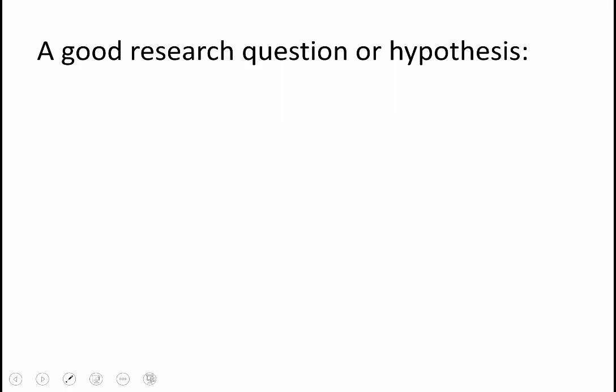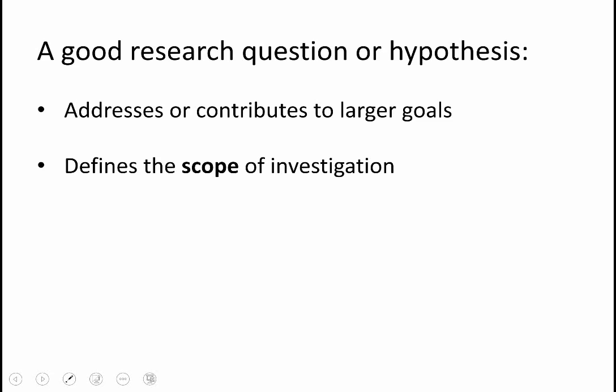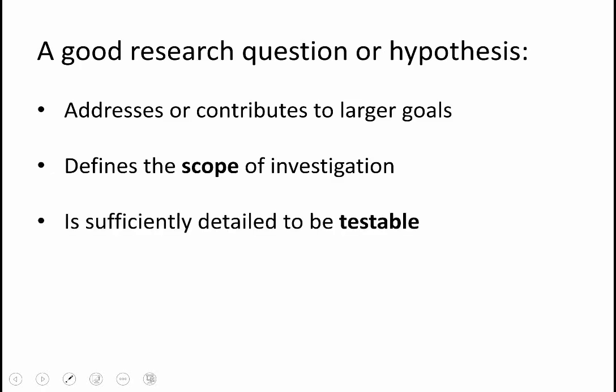Whether we're looking at a question or a hypothesis — whether we have enough prior information to make an educated guess — there are a couple of attributes they have in common. First, they're connected in some way to larger goals; in these investigations, your research question or hypothesis should fall within the given prompt and address it. A good question or hypothesis also defines the scope of an investigation — what is being studied and what is not — and that boundary is important. It needs enough detail to be testable: in the San Joaquin River example, specifying aquatic plants in the river (not bacteria or animals, and within a specific region around Scout Island) gives enough detail to describe what experiment will be conducted.